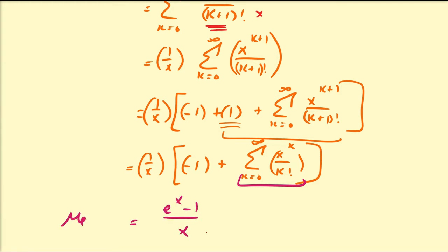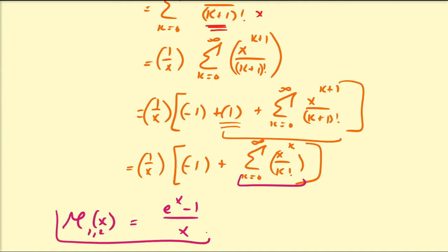That series is just e^x, so E_{1,2}(x) = (e^x - 1)/x.